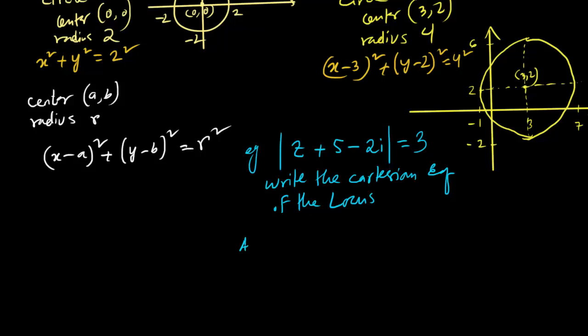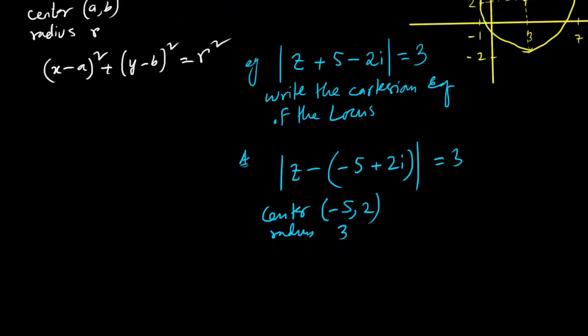So we have to write it like z minus, so instead of 5 we write minus 5, instead of minus 2 we write plus 2i equals to 3. So that when we multiply by the minus, it goes back to z plus 5 minus 2i. Here we can write the center is (-5,2) and the radius as 3. So the Cartesian equation is going to be (x+5)² plus (y-2)² equals to radius squared. That's it.